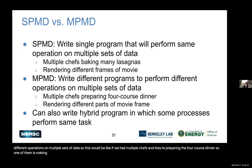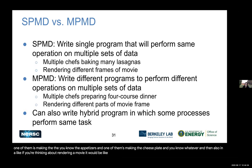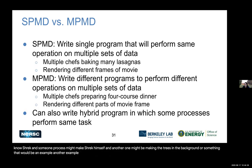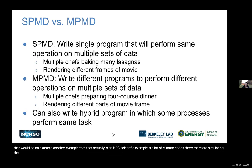An HPC scientific example of MPMD is climate codes — simulating the ocean, the atmosphere, and the land with different programs that simulate each component. You can also write a hybrid program where some processes perform the same task and others perform a different task — it's very flexible, you can do whatever your imagination permits.